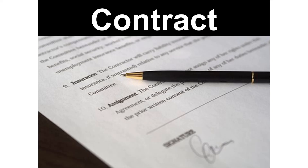Contract grading is when instructors develop a contract, usually stated in the syllabus, about what learners must do to achieve the desired grade. Normally this includes things like writing papers, completing projects, taking quizzes or exams, and so on.